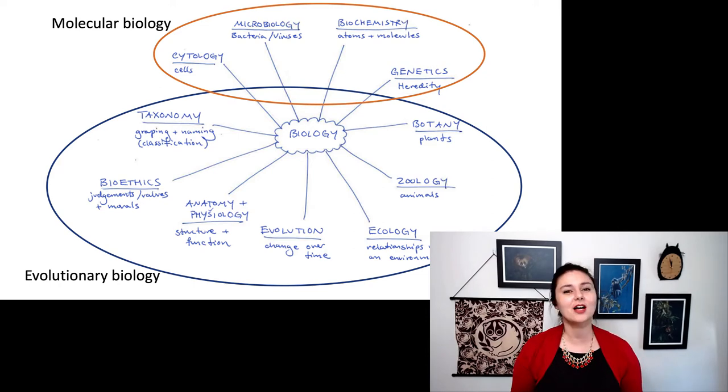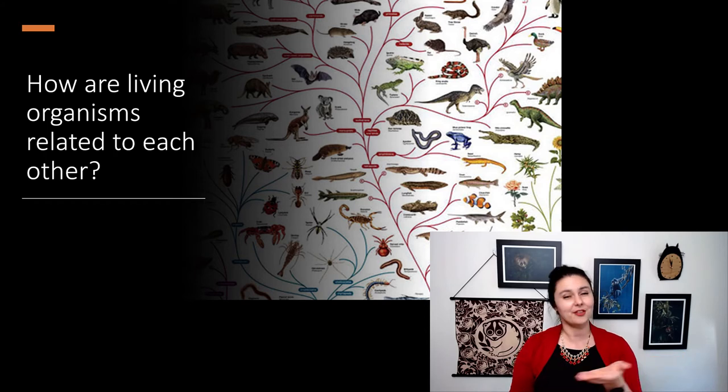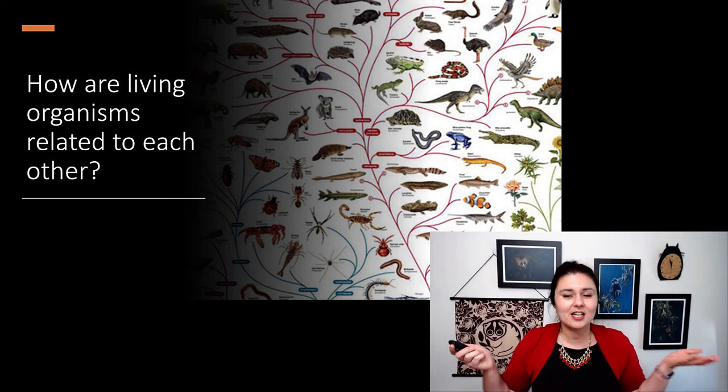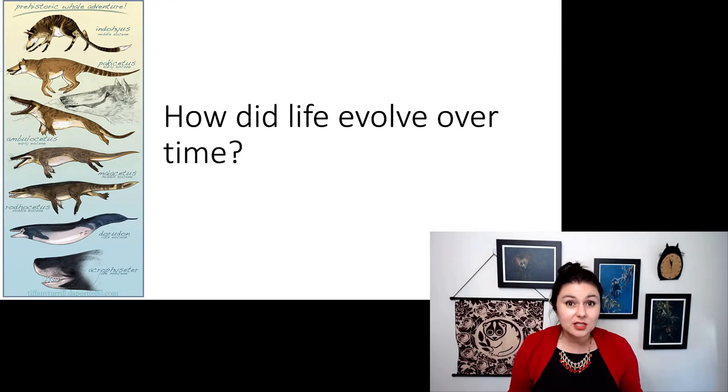In evolutionary biology, we have a couple big questions we ask. First, how are living organisms related to each other? Here, we're looking at the animals and other living organisms that exist right now, and we're trying to figure out how are they related, because there are a lot of similarities we see, and that does strongly imply that there are meaningful relationships between them. And second, if we know that all of the life out there is related somehow, how did it evolve over time? So here, it's more than just looking at what's alive today. We're looking at the evidence we have for previous species, the fossil record, and trying to figure out how we think these species came to be in the first place.